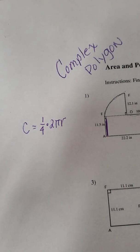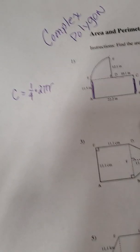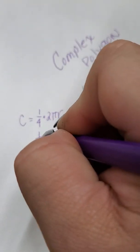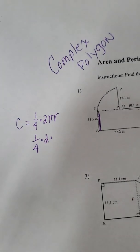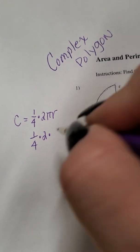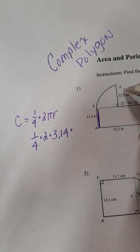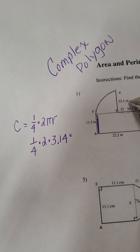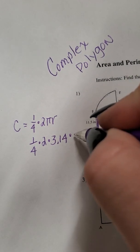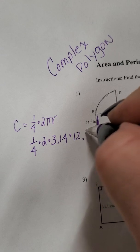So we have one-fourth times two. We'll use 3.14 for pi. And the radius of that circle if we go back up here and look was 12.1.